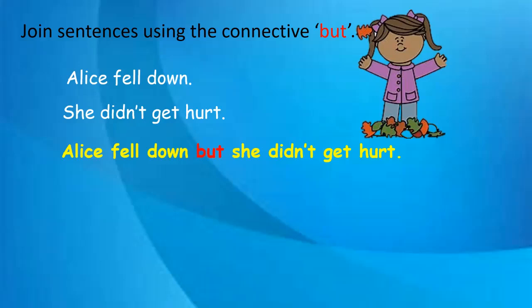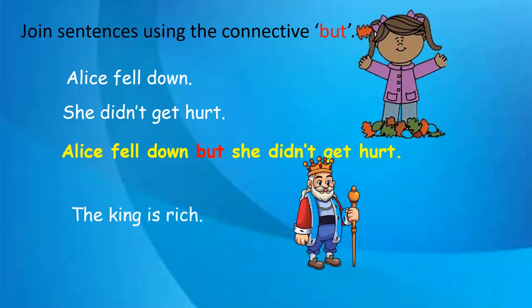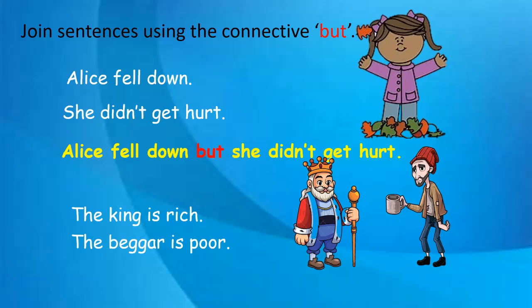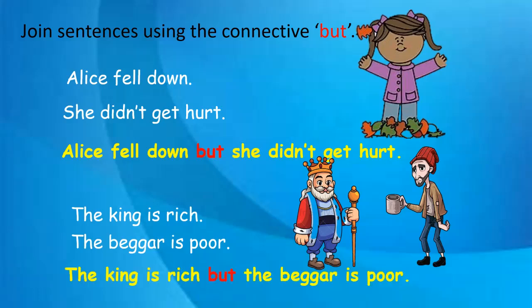Notice that 'she' in the second sentence is written with a small 's'. It is very important to know that a sentence has only one capital letter and only one full stop. Proper nouns that appear in the middle of a sentence are written in capital letters, and 'I' is always capital. Next exercise: 'The king is rich.' 'The beggar is poor.' Join these: 'The king is rich but the beggar is poor.'